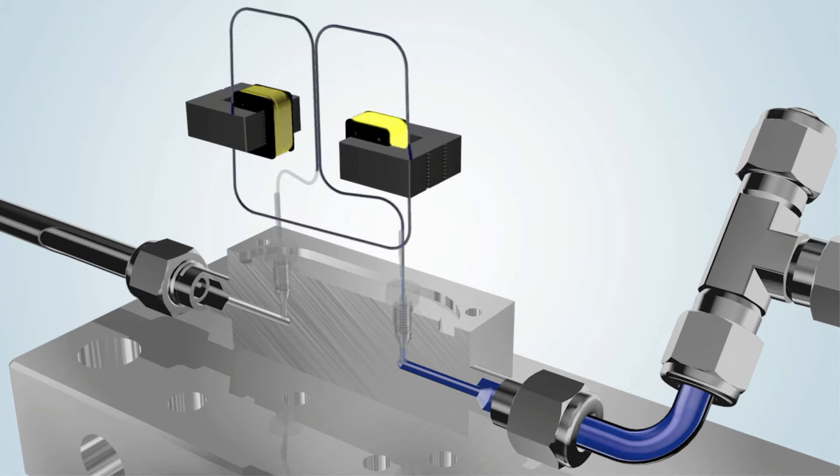All Coriolis instruments are equipped with a sensor tube which can be used to measure both gases and liquids extremely accurately. The optical sensor precisely measures how much the vibration deviates.